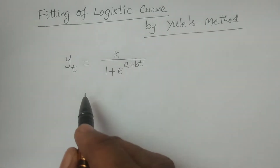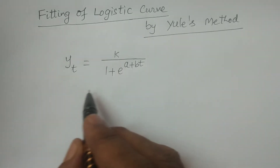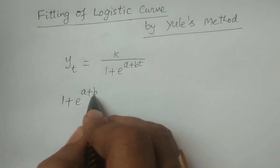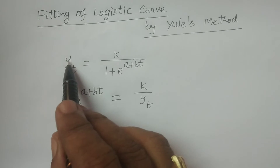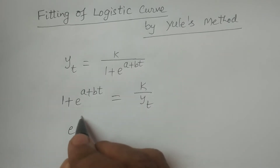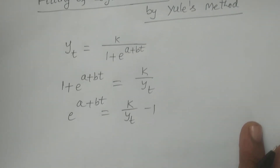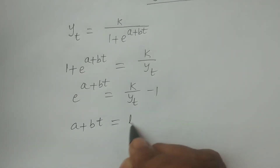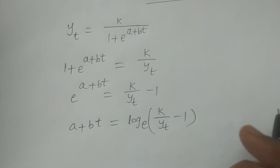If you consider a + bt, we can take the calculation as: 1 plus e to the power (a + bt) is equal to k divided by Y_t. Taking this term to the left-hand side, e to the power (a + bt) is equivalent to k/Y_t minus 1. And if you consider logarithms, then a + bt is equivalent to log base e of (k/Y_t minus 1).